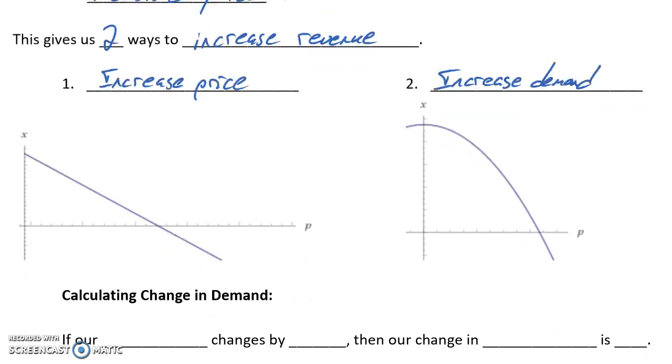In general, increasing demand is much more complicated than increasing price. Price is very easy to control - we can simply change the price we're asking for a particular item. The problem with increasing price, though, is that it has a negative impact on demand.